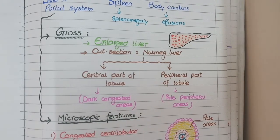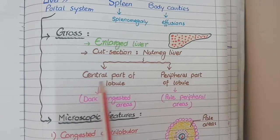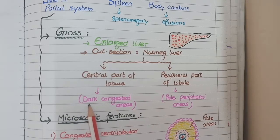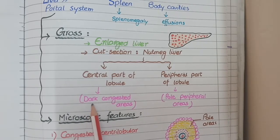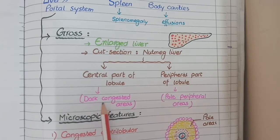But why does this speckled or nutmeg appearance actually occur? The liver is made up of multiple lobules, and at the center of each lobule is the central vein. When there is right-sided heart failure, the central veins at the center of each hepatic lobule become congested, and that is why the center of the lobules appears red due to congested blood.